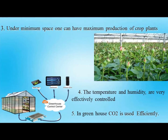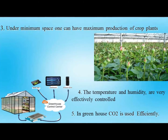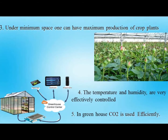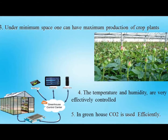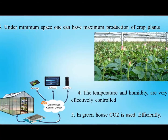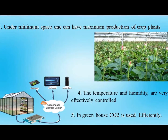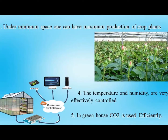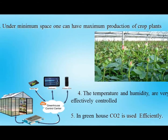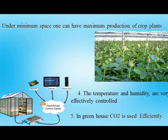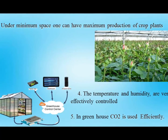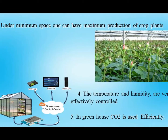Next, under minimum space, the greenhouse helps to get maximum production. One of the major reasons for the decrease in agricultural production in India is the lack of availability of enough agricultural lands. But the invention of Poly House farming is the solution for this lack of agricultural lands. We can obtain more crops from less space in Poly House farming.